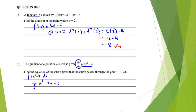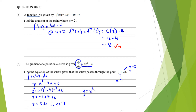We have to solve for c. We know x is negative 1 and y is 2, so 2 equals negative 1 cubed minus 4 times negative 1 plus c. That's 2 equals negative 1 plus 4 plus c, so 2 equals 3 plus c, therefore c is negative 1. The equation of the curve is y equals x cubed minus 4x minus 1.